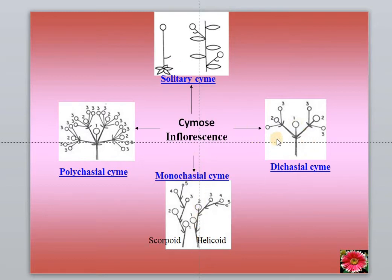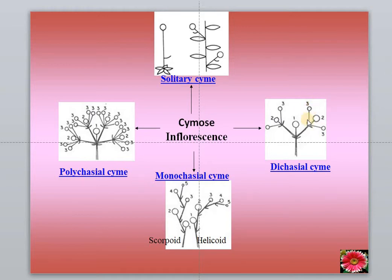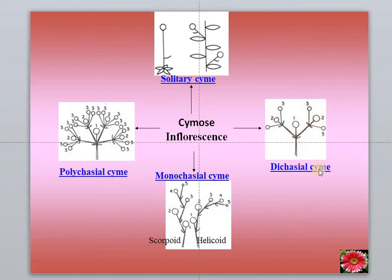Looking at the right side diagram, this is a dichasial sign. The terminal bud ended in a flower, and the lateral bud developed to form two branches. This is one inflorescence giving two branches, and each branchlet is a cymose inflorescence — a cymose sign. When an inflorescence gives two branches of cymose signs, that is called a dichasial cyme.